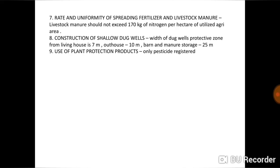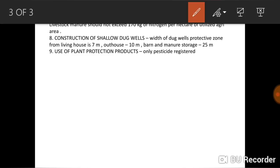The seventh rule is about uniformity of spreading fertilizers and livestock manure. The nitrogen content in livestock manure should not exceed 170 kilograms per hectare. That is the seventh rule provided by GAP.